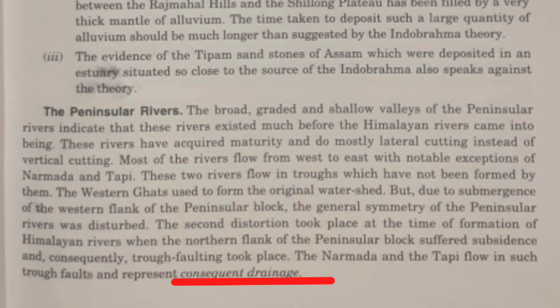The Narmada and Tapi rivers flow in a trough which is the consequence of trough faulting. In this context, the Narmada and Tapi rivers are known as consequent drainage. This was for today, and in the next video I will be discussing the Himalayan rivers. If you found this video helpful and informative, please like, share, and subscribe. Thank you for watching.